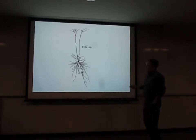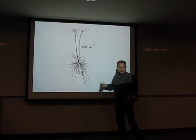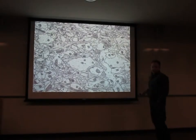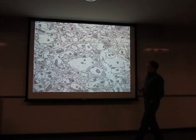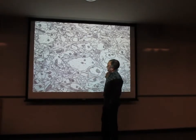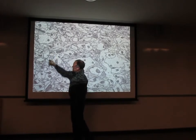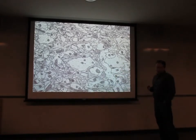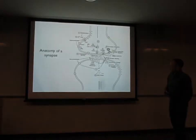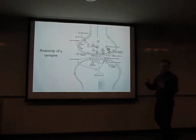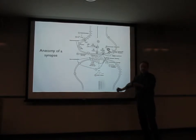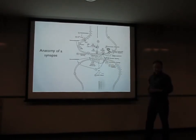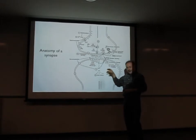Any given neuron is receiving inputs from about 1,000 to 10,000 other neurons. Taking a cross-section of the tissue shows all these wires coming together. Where the cell outlines meet and you see vesicles bunched up on either side — that's a synapse, where signals are being sent from one neuron to another. Zooming in on that structure, we see all this fine molecular machinery. This is really the essence of computation — where all the signal processing is happening, as signals pass from one neuron to another in a very complex electrochemical cascade.